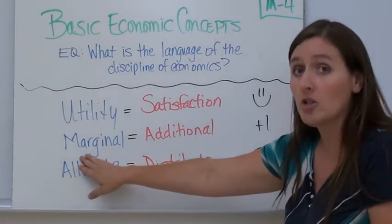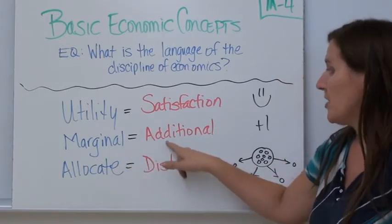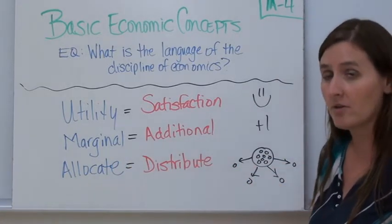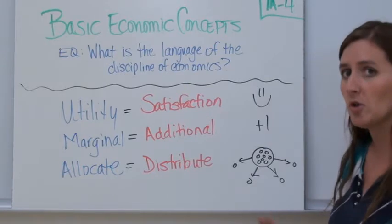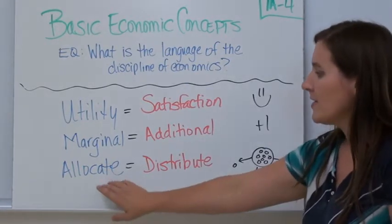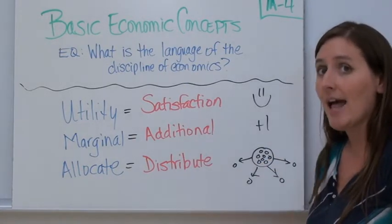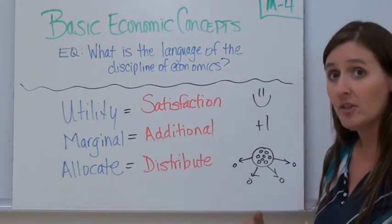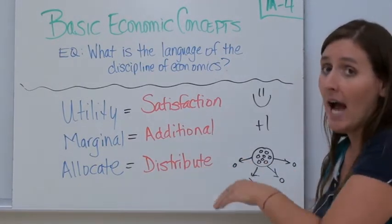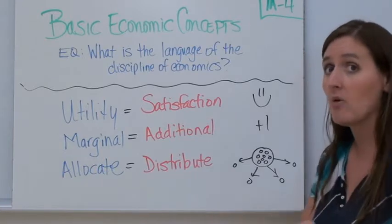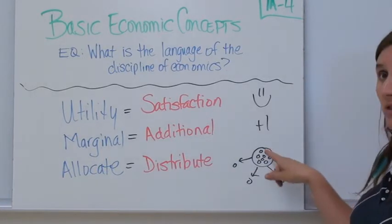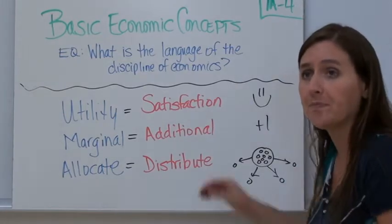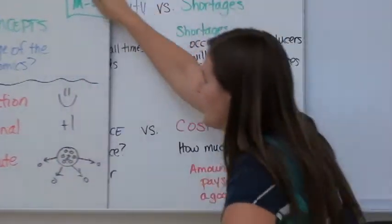Marginal, which we talked about before, just means additional — what's the additional cost or additional benefit. And allocate is just another word for distribute: how goods and services are going to be allocated, or distributed, among people.